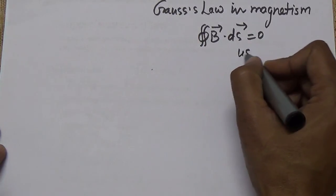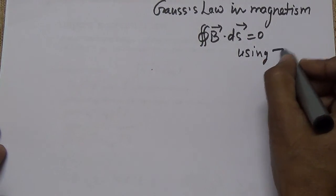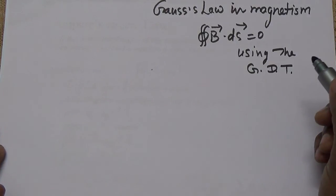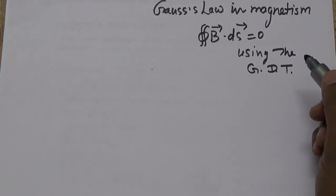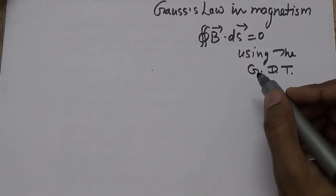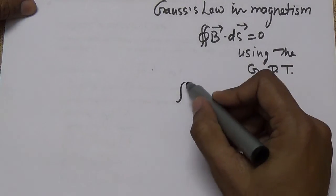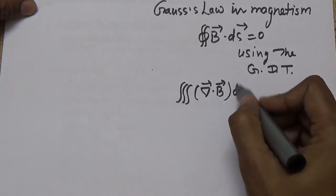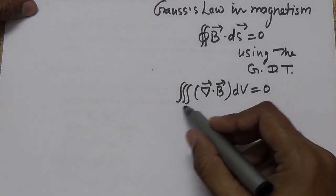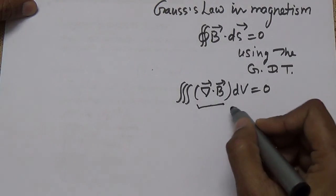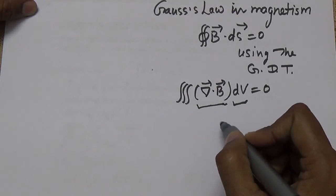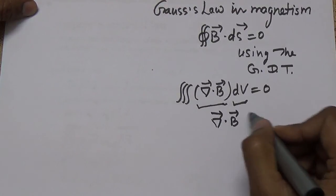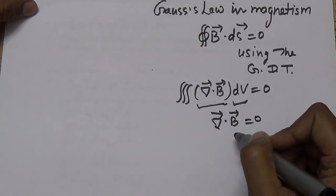Using the Gauss Divergence Theorem, the left-hand side becomes the volume integral of divergence of B dV equals zero. Again, either the volume factor is zero or the inner factor is zero. Since the volume cannot be zero, we conclude del·B equals zero. This is the second differential equation, corresponding to Gauss law in magnetism.